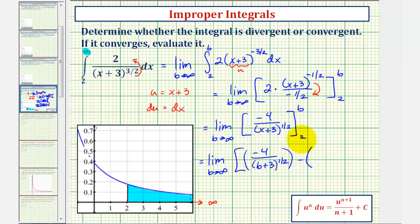Minus when x is 2 we have -4 divided by the quantity (2 + 3) to the 1/2 power.